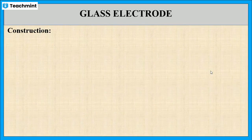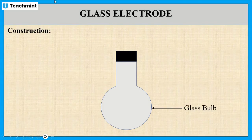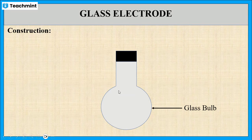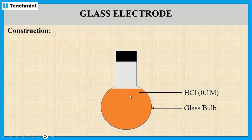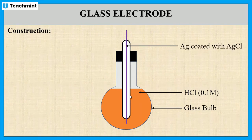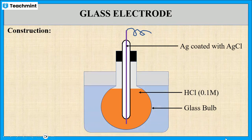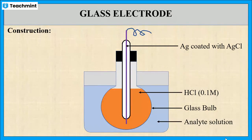Now let us see the construction of this glass electrode. This electrode mainly consists of a glass bulb made up of a special type of glass with high electric conductance. This glass bulb is filled with 0.1 molar HCl solution of constant pH. The HCl solution has a known concentration, hence it has constant pH. This bulb is inserted with a silver wire coated with AgCl. The overall glass electrode is then dipped into the analyte solution containing H+ ions.